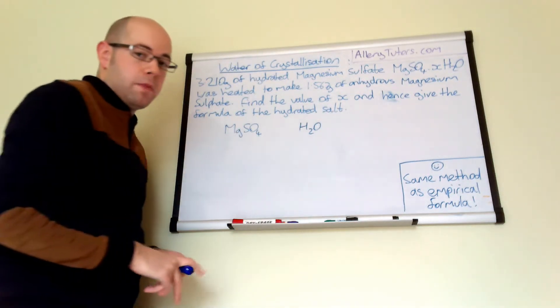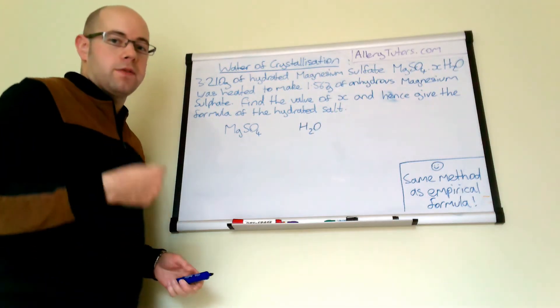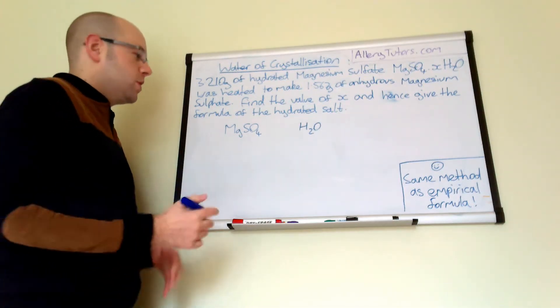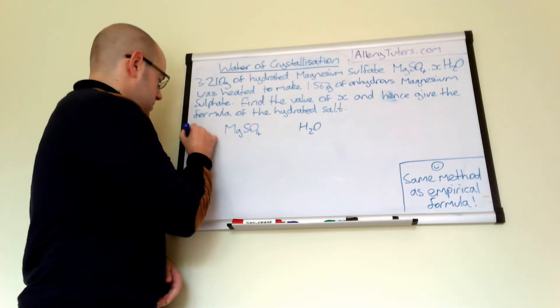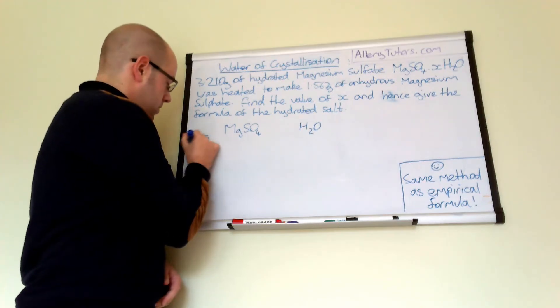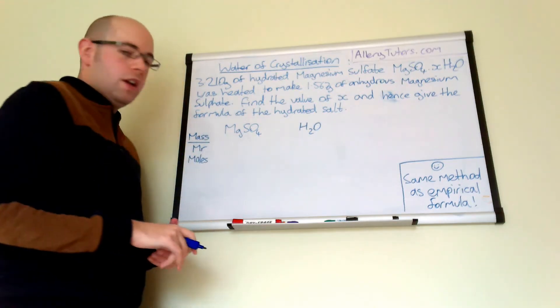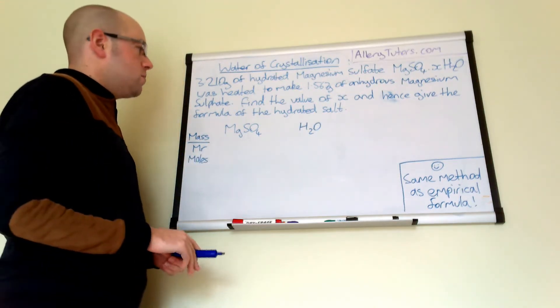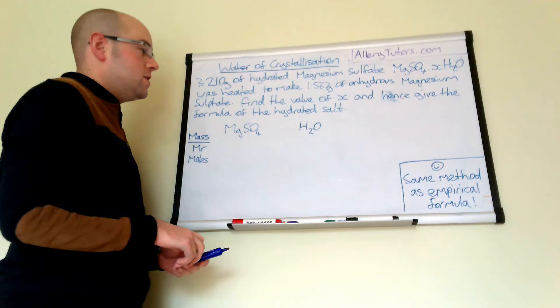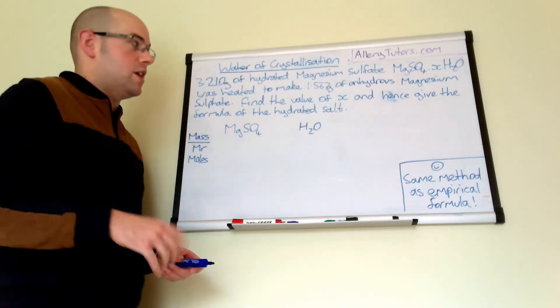But just like the empirical formula we need to work out the number of moles. So the number of moles is mass divided by MR and that will tell us the number of moles in our substance. So we need to work out the amount of mass of magnesium sulfate without the water attached to it.